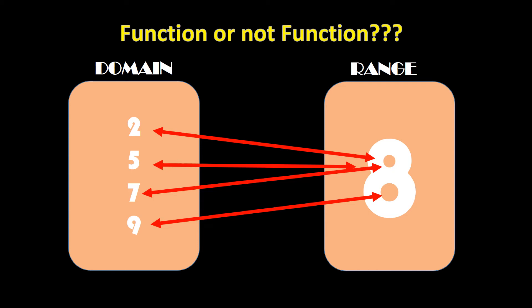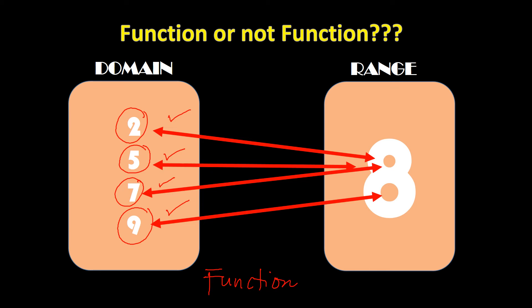Next example: we have the domain with elements 2, 5, 7, 9 and the range with only one element, which is 8. We concern ourselves with the domain. For 2, there is a line connected and it's only one — good. For 5, there is one connector — good. For 7, there is one line — good. For 9, there is one line. So this is a function. Regardless of what your range looks like, you don't need to worry about it.